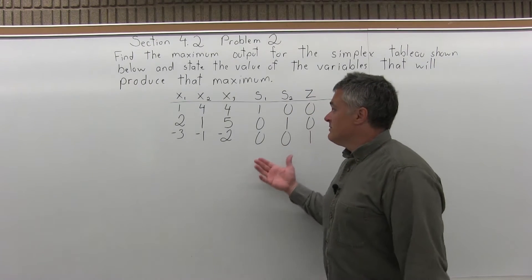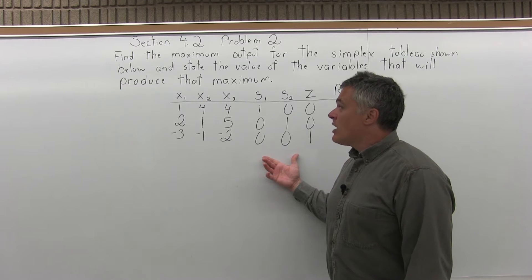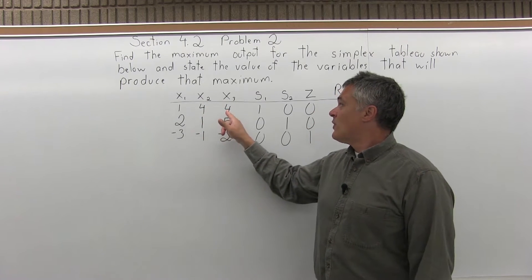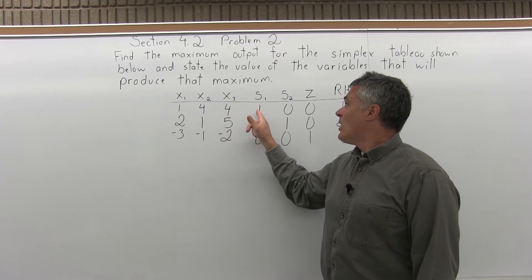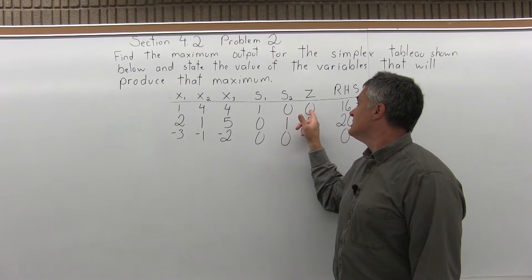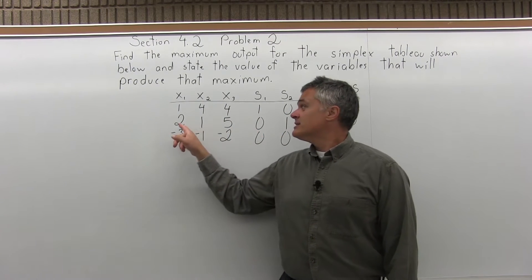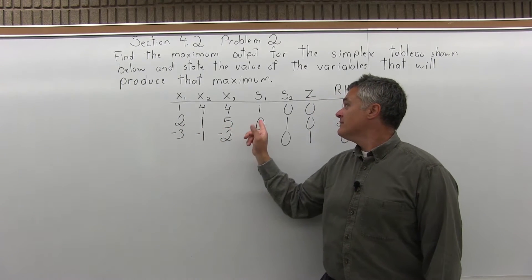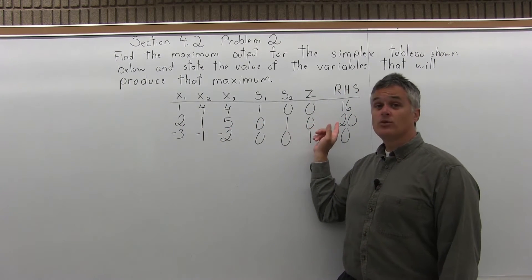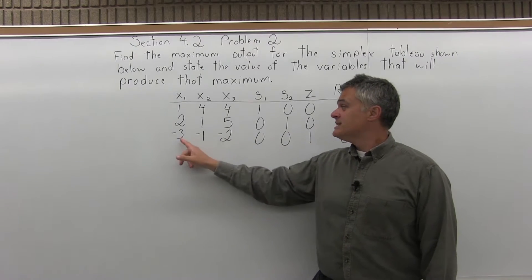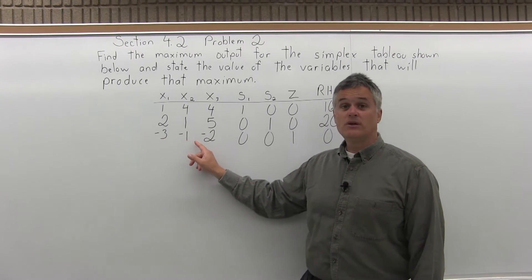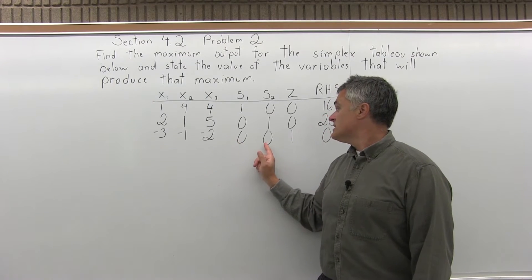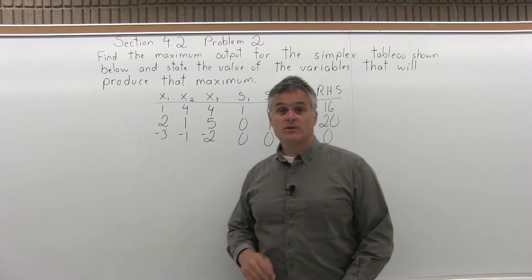We have a simplex tableau with three rows. The top row is 1, 4, 4, 1, 0, 0, 16. The second row is 2, 1, 5, 0, 1, 0, 20. And the bottom row is negative 3, negative 1, negative 2, 0, 0, 1, 0.